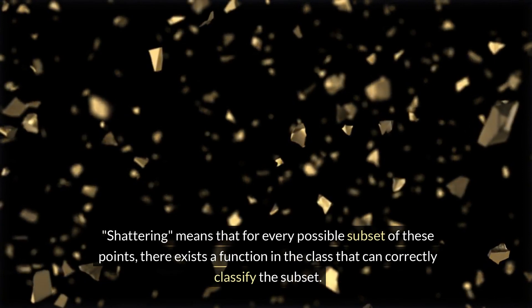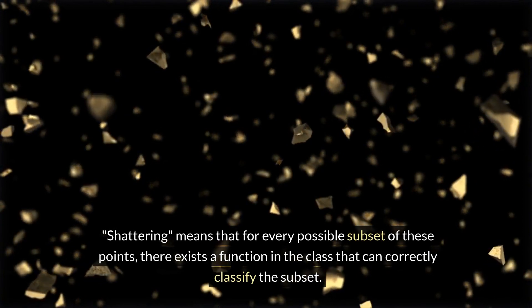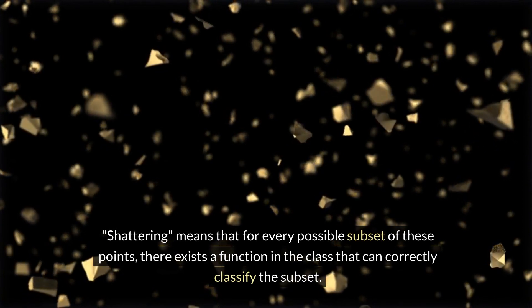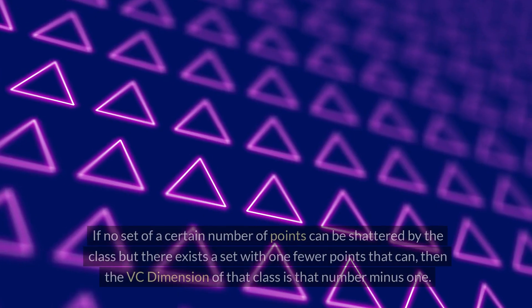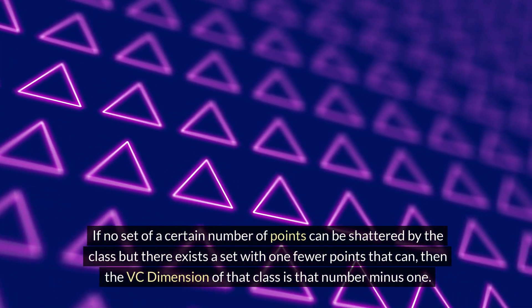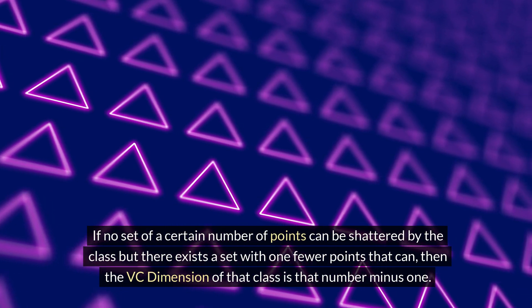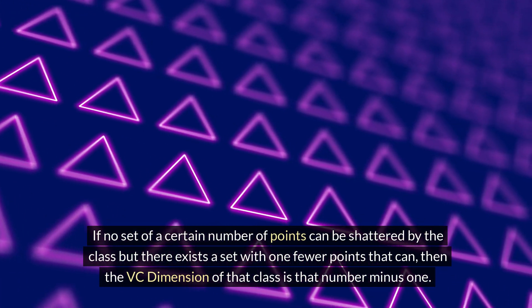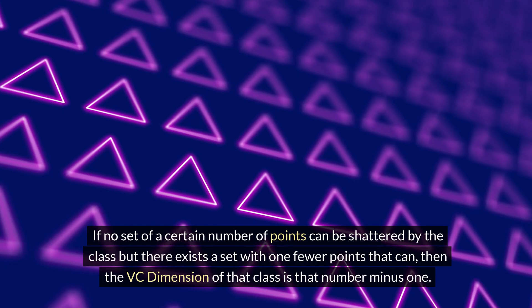Shattering means that for every possible subset of these points, there exists a function in the class that can correctly classify the subset. If no set of a certain number of points can be shattered by the class but there exists a set with one fewer points that can, then the VC dimension of that class is that number minus one.